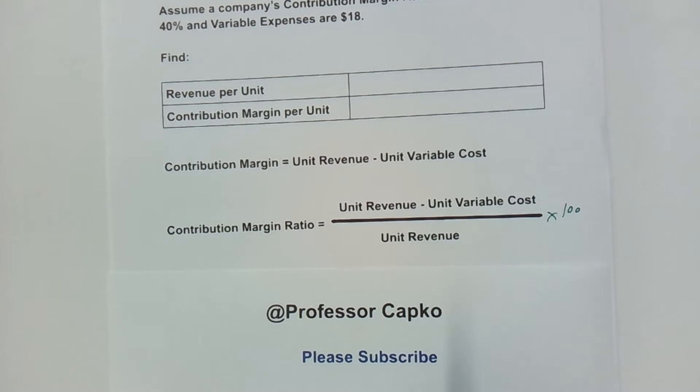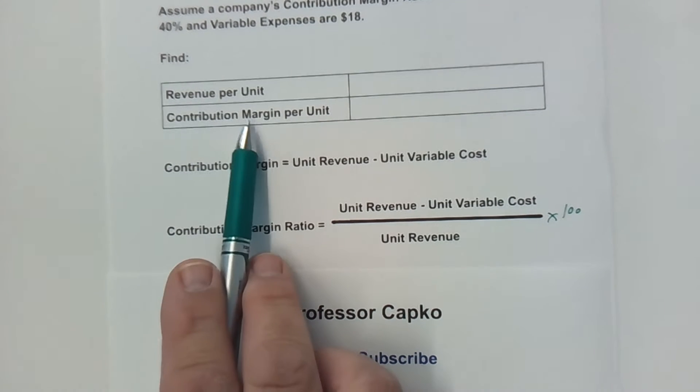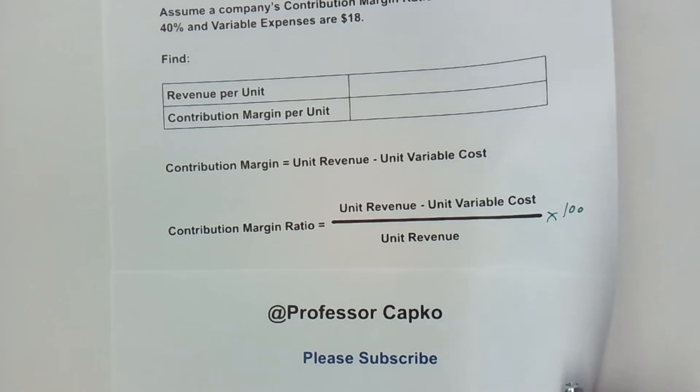That's the formula we need to use. So how do we use these to find out the revenue per unit and the contribution margin per unit?